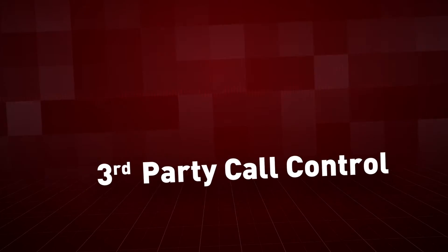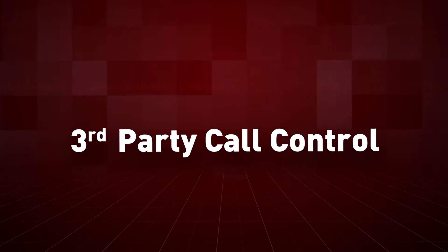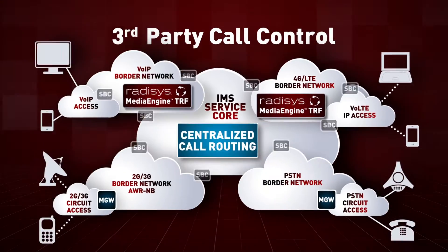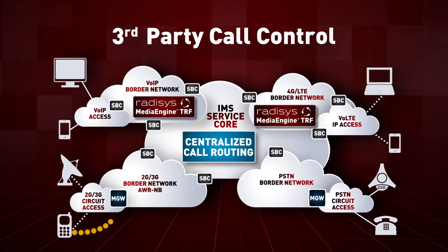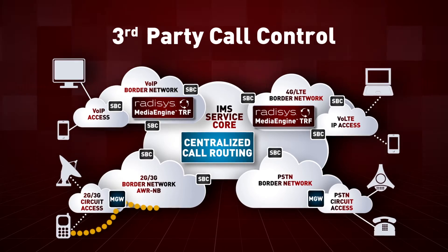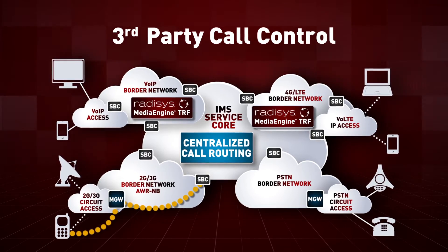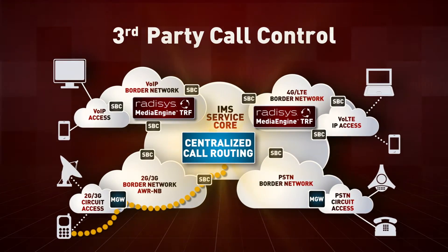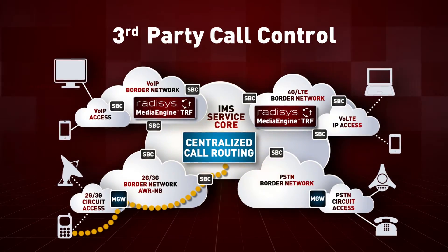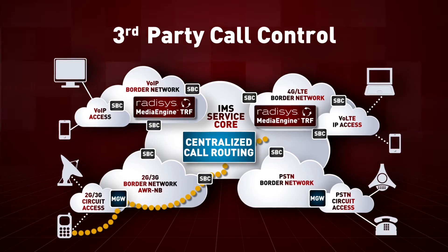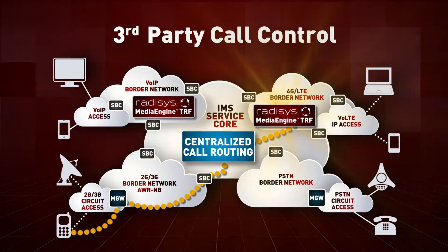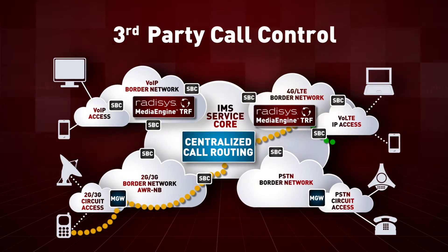The second approach is known as third-party call control. SBCs forward the call onto the centralized call routing engine, which interprets the SDP information and redirects the media packet stream to the Media Engine TRF to apply transcoding.